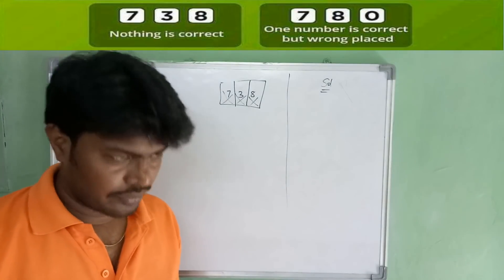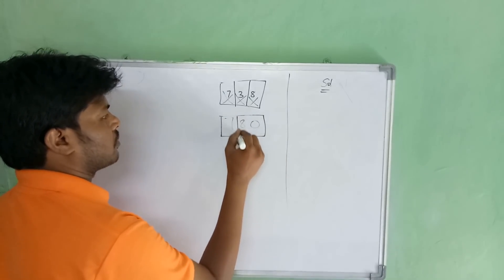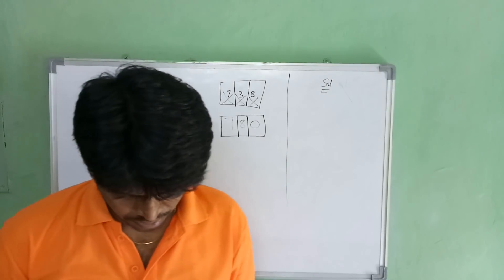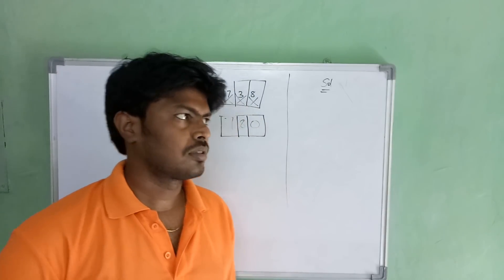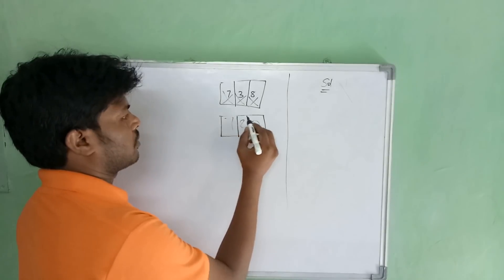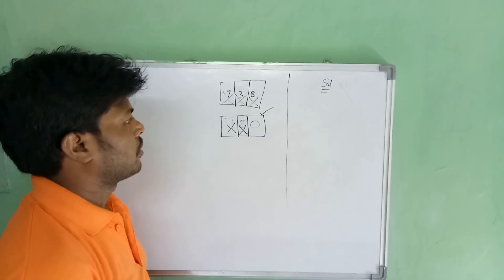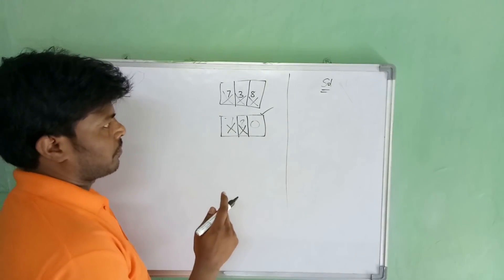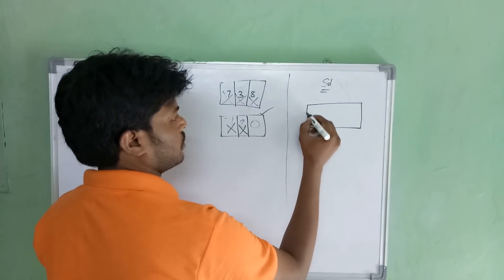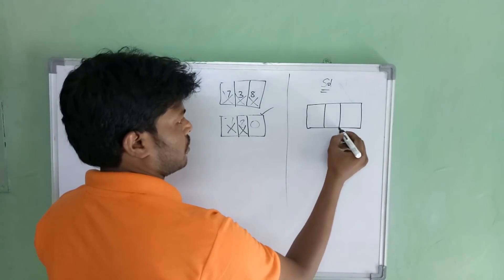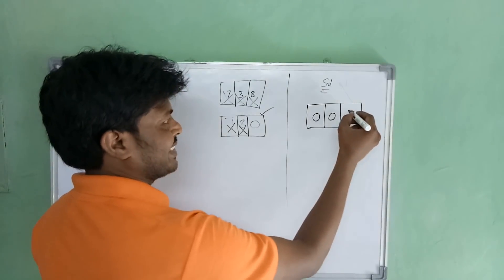Look at another figure: 7-8-0. It is shown that one number is correct but wrongly placed. By looking at this, we can know that 7 and 8 are wrong, and 0 is correct but wrongly placed. If 0 is wrongly placed, it should be either in this place or this place, but definitely not in this place.